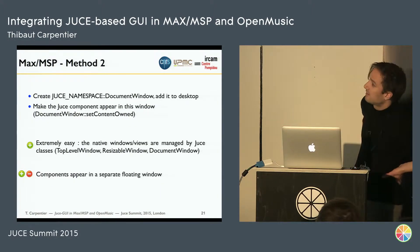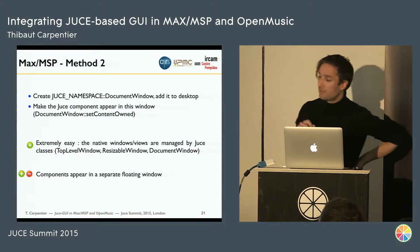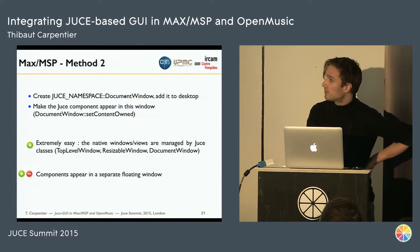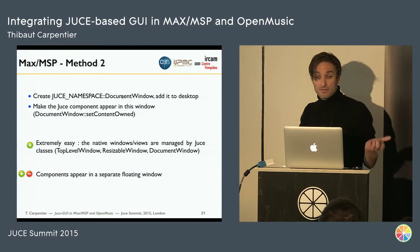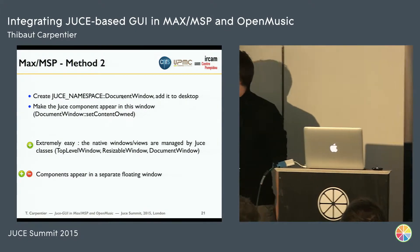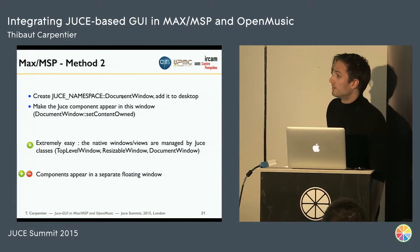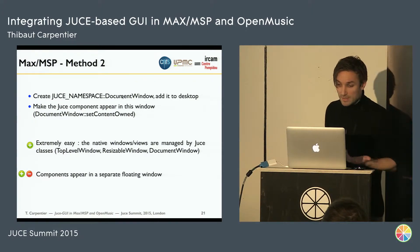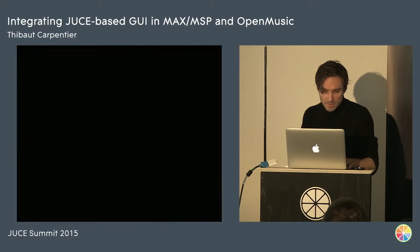Another method, even easier, is to directly create a JUCE DocumentWindow within Max MSP and put the JUCE component in it. That's basically three lines of code. All the native parts are already handled by the main JUCE classes like TopLevelWindow, ResizableWindow, and DocumentWindow. The pros: super easy to do. The same constraint applies — it's in a separate window.